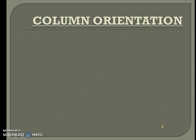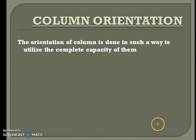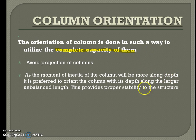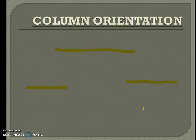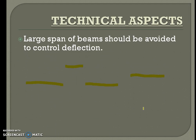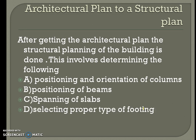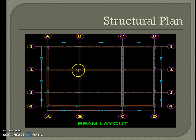The depth of the column should be oriented along the longer length in order to utilize the complete capacity of the column and avoid projection. Since the moment of inertia of the column is greater along its depth, it is preferred to orient the column with its depth along the larger unbalanced length. This provides proper stability to the structure. Going back to the slide, you can see that the columns are oriented along the longer span of the beam — the depth is oriented along the longer span.